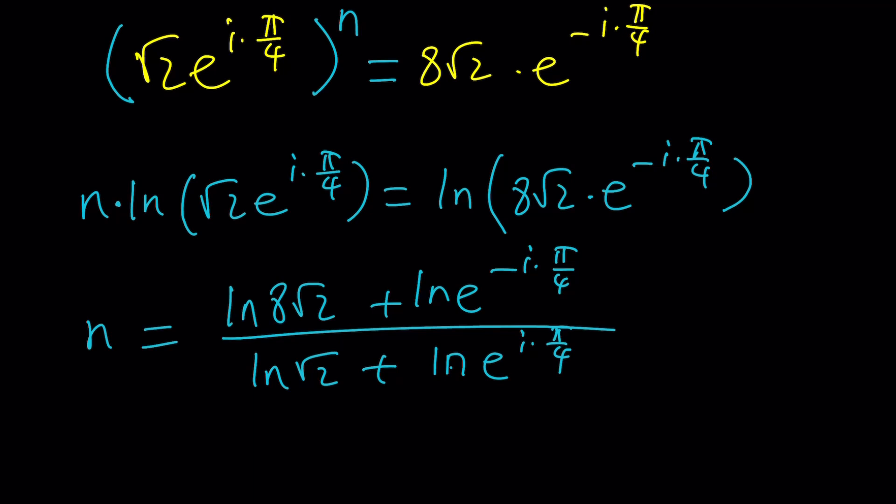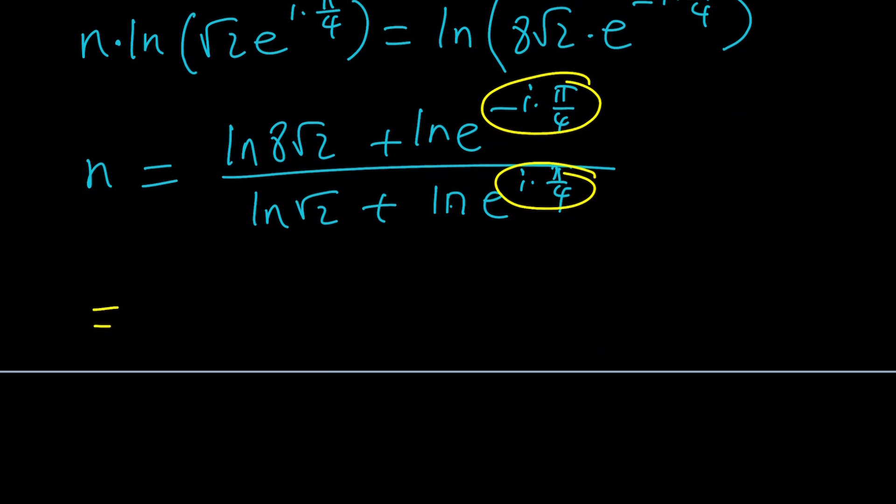From here, these will turn into basically these two numbers. And then we should get n equals (ln(8√2) - iπ/4) divided by (ln(√2) + iπ/4). Hmm, interesting. Where do we go from here? I mean, we kind of need to do something about it. First of all, 8√2 can be written as a power of 2. The same thing goes for √2. And maybe we can find something from there. But I want to look at it from another perspective. So let's go ahead and do this instead.